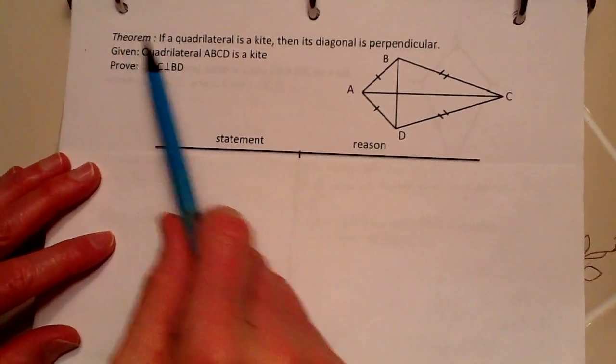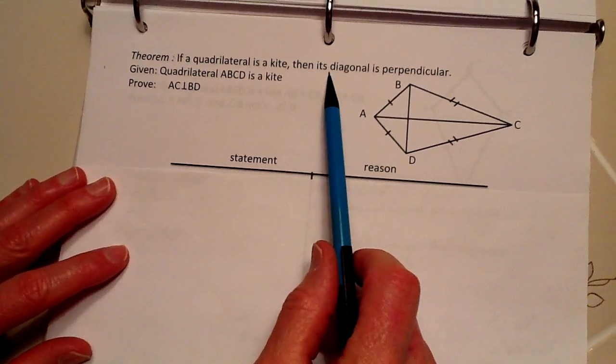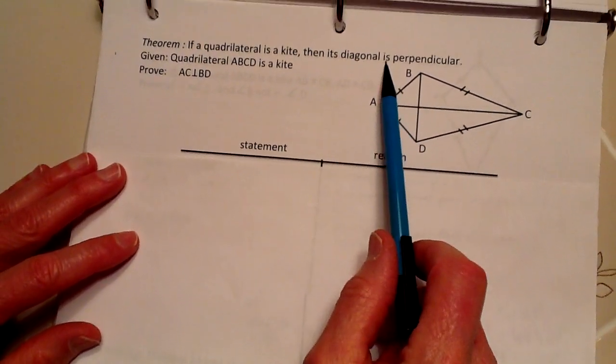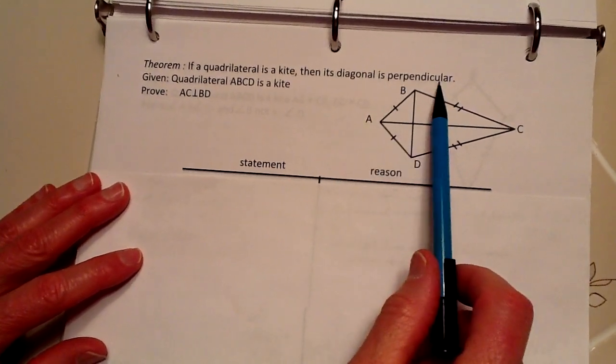Now we're going to prove the theorem. If a quadrilateral is a kite, then its diagonals are perpendicular.